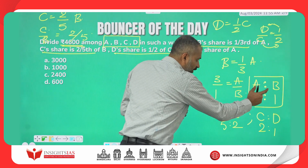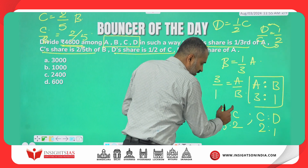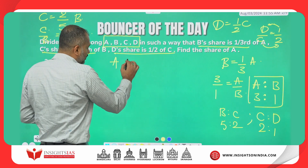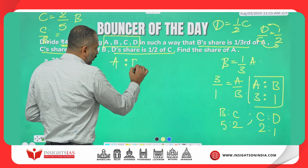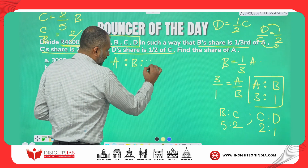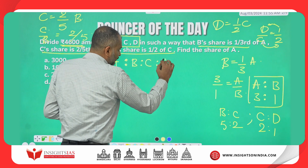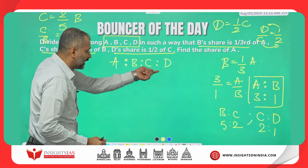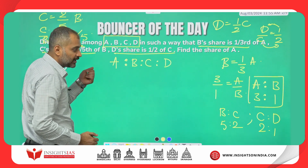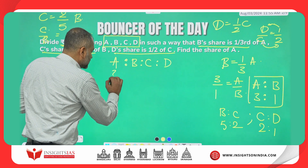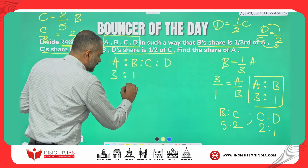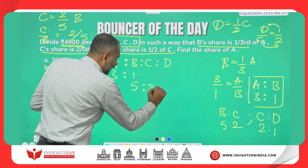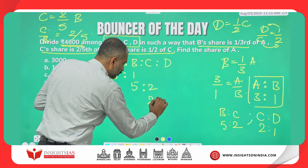Now, this is the ratio of A and B, this is B and C, this is C and D. If I have to compare all four in one line — individually they are compared, but here I am comparing all four together. This is 3 is to 1, this is 5 is to 2, and this is 2 is to 1.